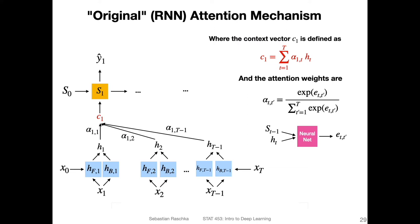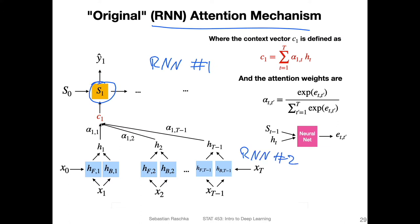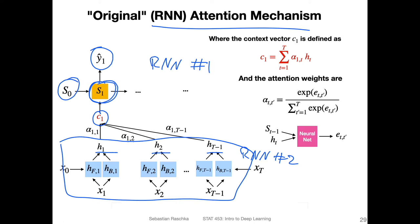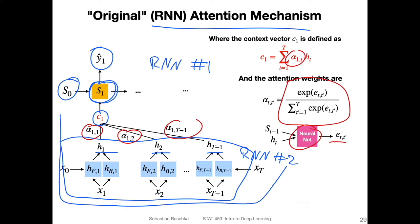This is a recap of what we covered in the previous video. We had an RNN with the attention mechanism. We had RNN number one and a bidirectional RNN number two. For each time step, the RNN was creating an output word, and in addition to receiving the previous hidden state, it was also receiving a context vector depending on the whole sequence input. We had the hidden representations multiplied by attention weights, which were a normalized version of values computed by a neural network. The key idea was that we had the whole sequence in a weighted form as input.